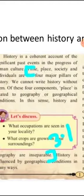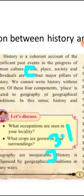Now let us move on to the give reasons section. Give reason 1: there is a close relation between history and geography. The answer is on page number 1. Time, place, society and individuals are the 4 major pillars of history, and history and geography are inseparable.